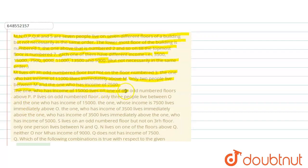Only two people live between M and the one who has income of 7500. The one who has income of 15000 lives on one of the odd numbered floors above P. P lives on odd numbered floor. Only three people live between O and the one who has income of 15000.